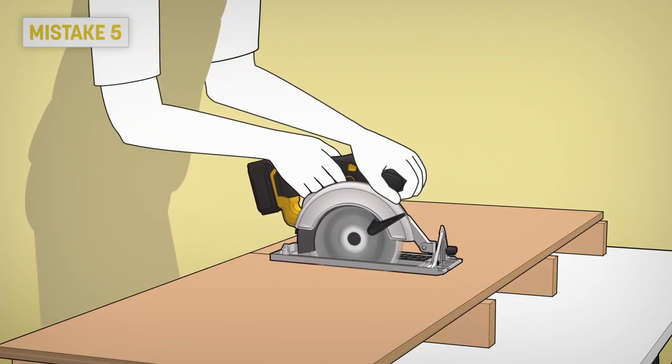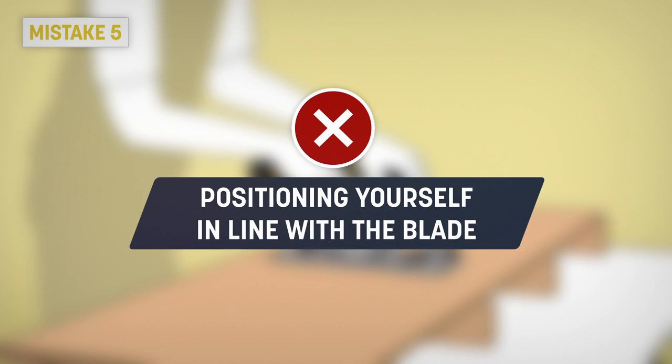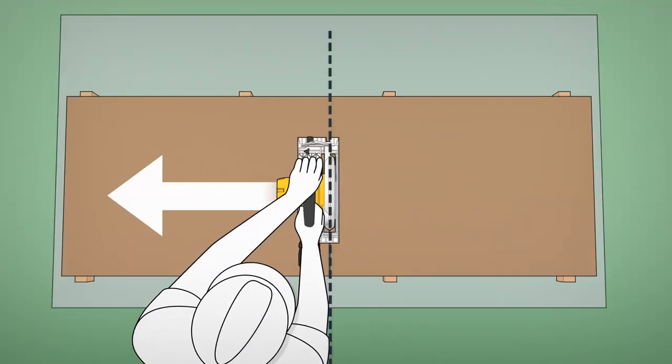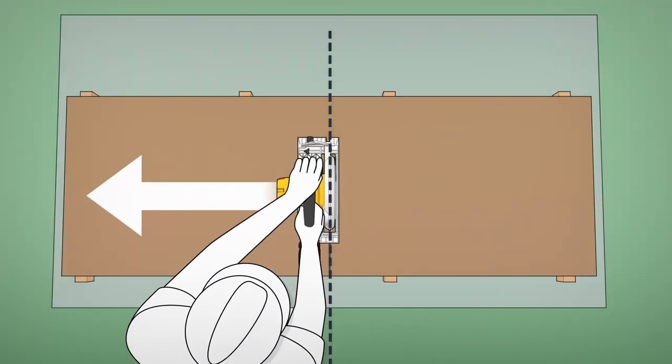Mistake 5: Positioning yourself in line with the blade. It isn't always possible to control kickback forces. That's why you have to position your body on one side of the blade, not in line with it.